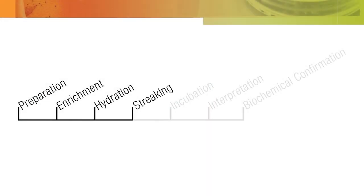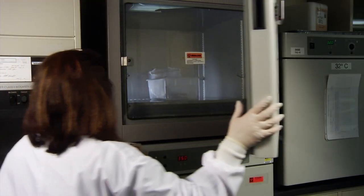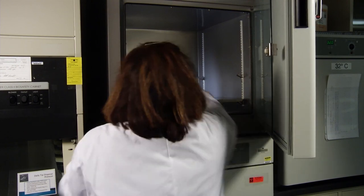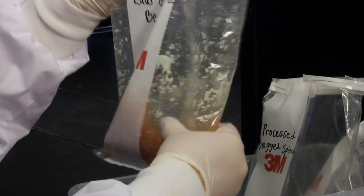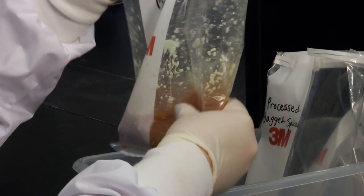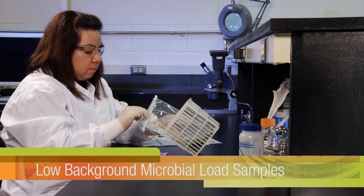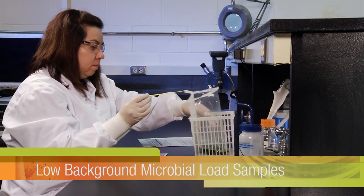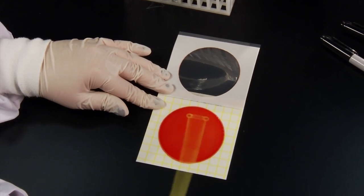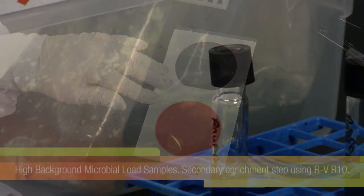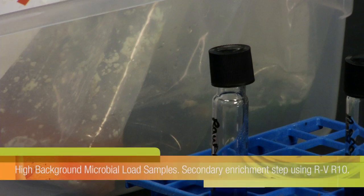The next step is streaking your enriched product samples onto the pre-hydrated 3M PetriFilm Salmonella Express Plate. Remove the enrichment medium from the incubator after the required incubation period and agitate its contents by hand. For low background microbial load samples, proceed directly with streaking the enriched sample onto a hydrated plate. For high background microbial load samples, perform a secondary enrichment step by performing the following.